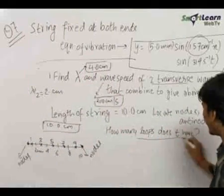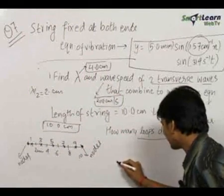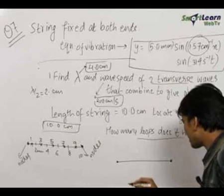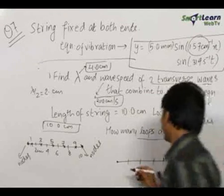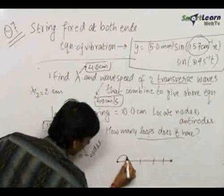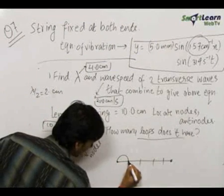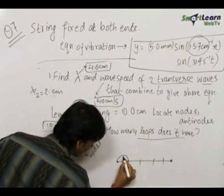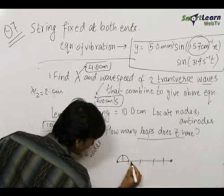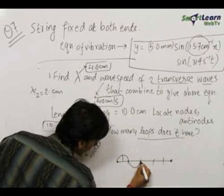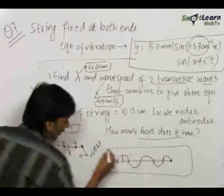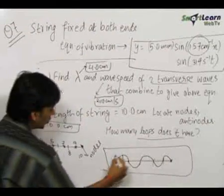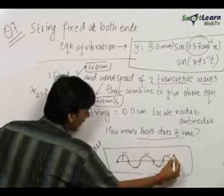Now, to find out the number of loops, we draw the string again at 2, 4, 6, 8, 10 centimeters. This will be a node. Therefore, this point will always be at rest. The antinode is the point which has maximum displacement. So, the standing wave will be of this format. Therefore, the number of loops is 1, 2, 3, 4, and 5.